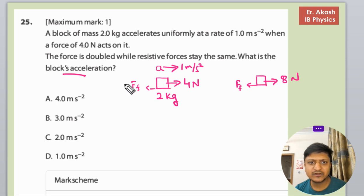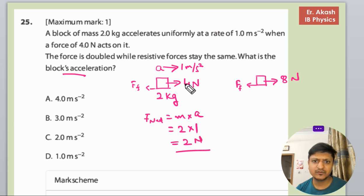First, we need to calculate the friction force. We find the net force: F_net equals mass times acceleration, which is 2 kg times 1 m/s², so F_net is 2 newtons. Since 4 minus F_friction equals 2 newtons, F_friction equals 4 minus 2, which is 2 newtons.